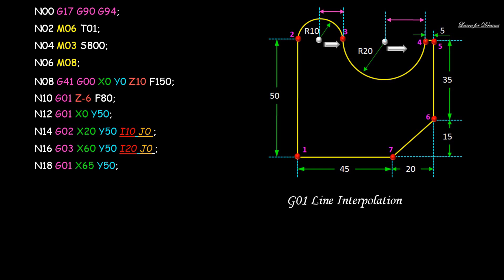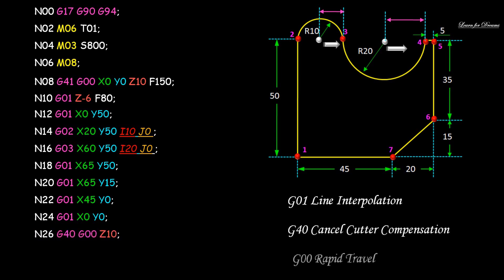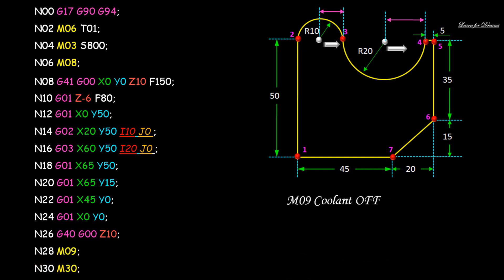From point 4 to point 5: N18 G01 X65 Y50. From point 5 to point 6: N20 G01 X65 Y15. From point 6 to point 7: N22 G01 X45 Y0 — G01 is linear interpolation. Now we retract the tool and cancel cutter radius compensation: N26 G40 G00 X0 Y0. Then we turn off the coolant with M09 and end the program tape using M30.